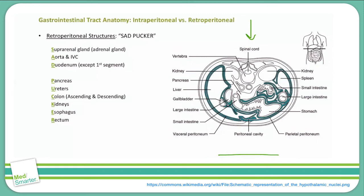Now remember, in this mnemonic SAD PUCKER is singular, not plural. This is important because if you make the mistake — as I did on my GI exam in med school — of assuming there's an S at the end of SAD PUCKER, you might think the spleen or stomach is retroperitoneal. But remember, there's only one S in SAD PUCKER.